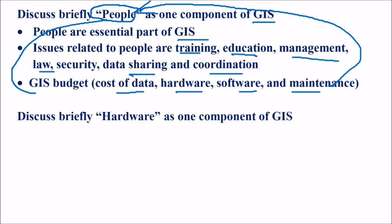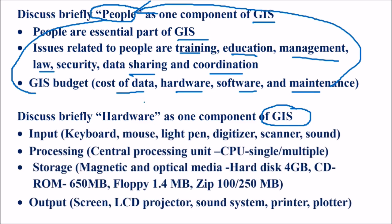Discuss briefly hardware as one component of GIS. GIS is not just a software. Quantum GIS, ArcGIS, SAGA or QGIS alone are not GIS — unless you have hardware with them, they will not be able to run. Hardware is an important component of GIS. You need input like keyboard, mouse, light pen, pen digitizer, and scanner. You also need a strong processing unit CPU, good storage, a good display like screen or projector, printer, and plotter to add to your GIS.